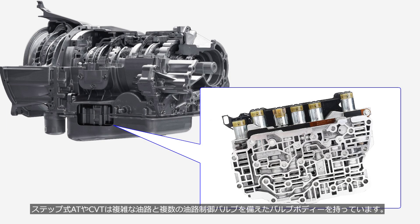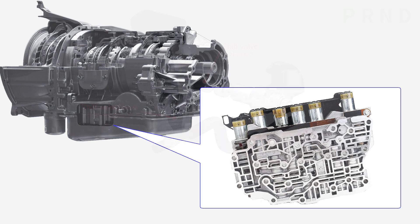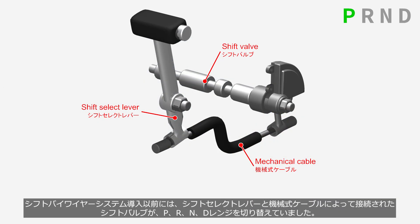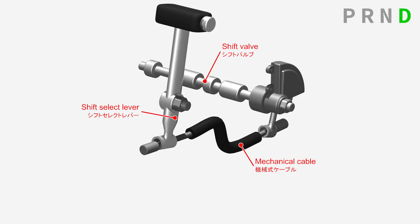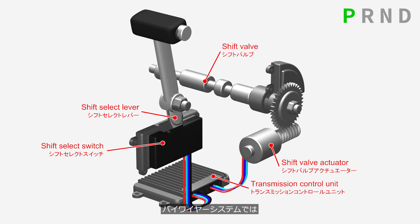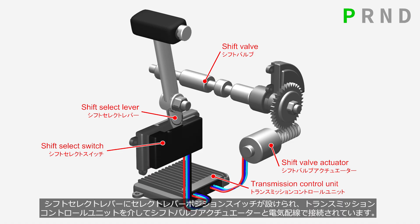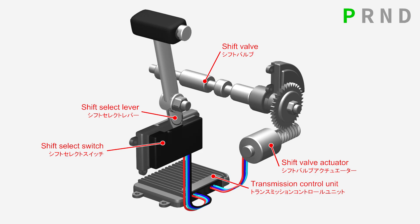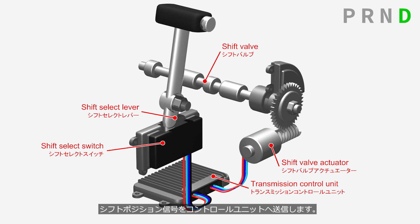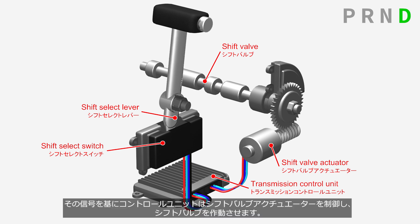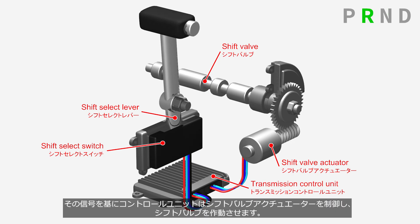Stepped automatic transmissions and CVTs have a valve body with complex oil passages and multiple hydraulic control valves. Before shift-by-wire, a shift valve connected to the shift selector lever by a mechanical cable switched between P, R, N, and D ranges. In shift-by-wire systems, the shift select lever incorporates a position switch connected to the shift valve actuator via electrical wiring through the transmission control unit. The position switch detects the driver's operation and sends a shift position signal to the control unit, which then activates the shift valve actuator.